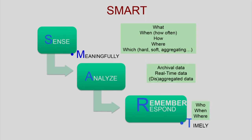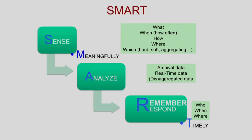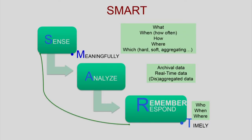Everything comes together: we sense meaningfully to get responses to the questions of what, when, how, where, and which things have to be sensed. We analyze archival data, real-time data, aggregated or disaggregated, to produce the right response — responding to who, when, and where in a timely fashion. And one more item: remembering the response. If each one of us had to do full analysis every time we face a situation, that would take too long. Humans have memory for this purpose; a computer must store it persistently so it survives failures, and this whole thing happens in a continuous feedback-driven loop.